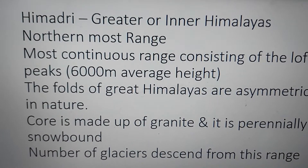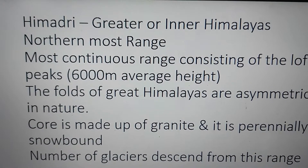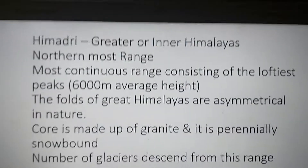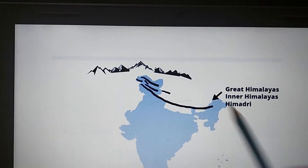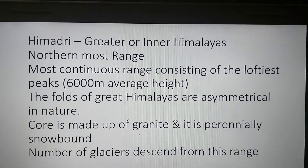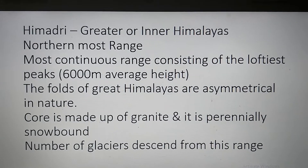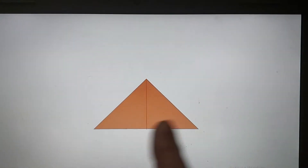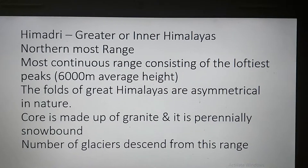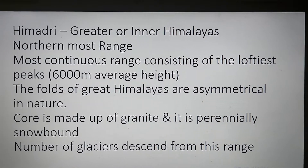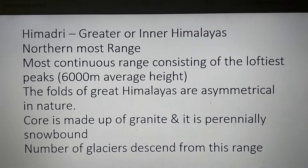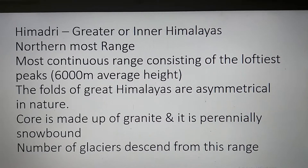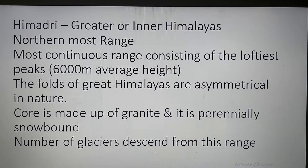Let us revise the first range of the Himalayas. They are called Himadri, also called Greater Himalayas, and they are the northernmost range of our country. They form a mostly continuous range consisting of the loftiest mountains, with an average height of about 6,000 meters. Their folds are asymmetrical in nature, and the core of the mountain is made of granite. The mountains are perennially snow-bound — covered with snow throughout the year — and there are a number of glaciers which descend from this range.